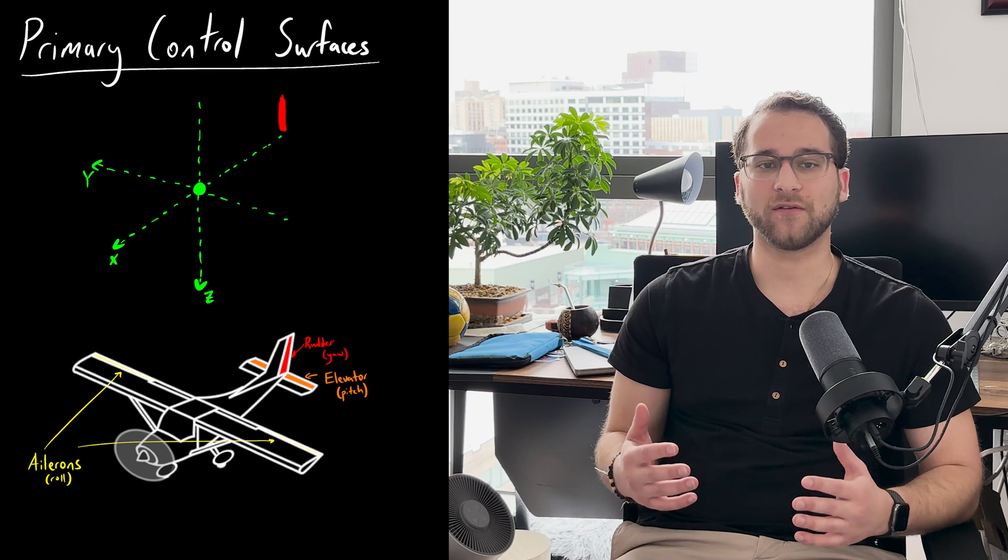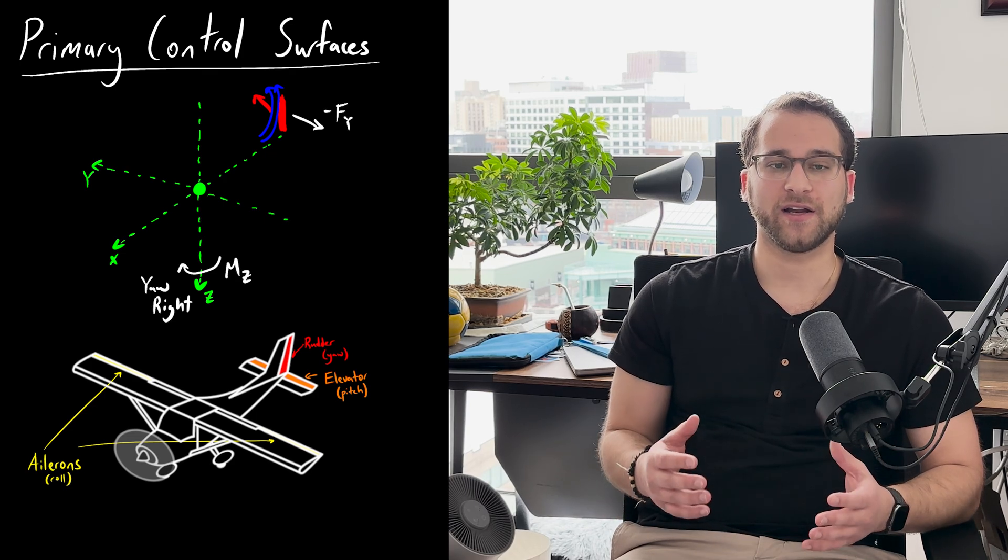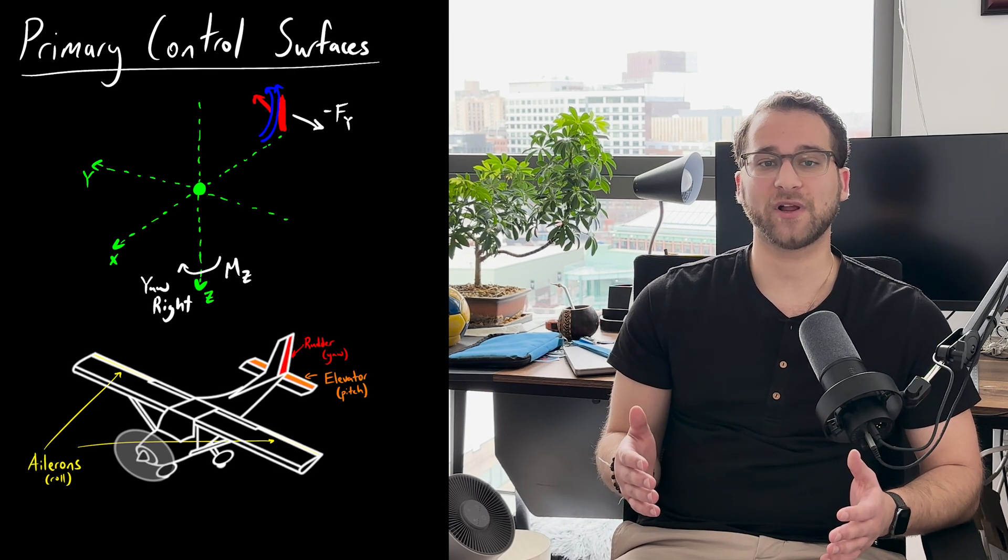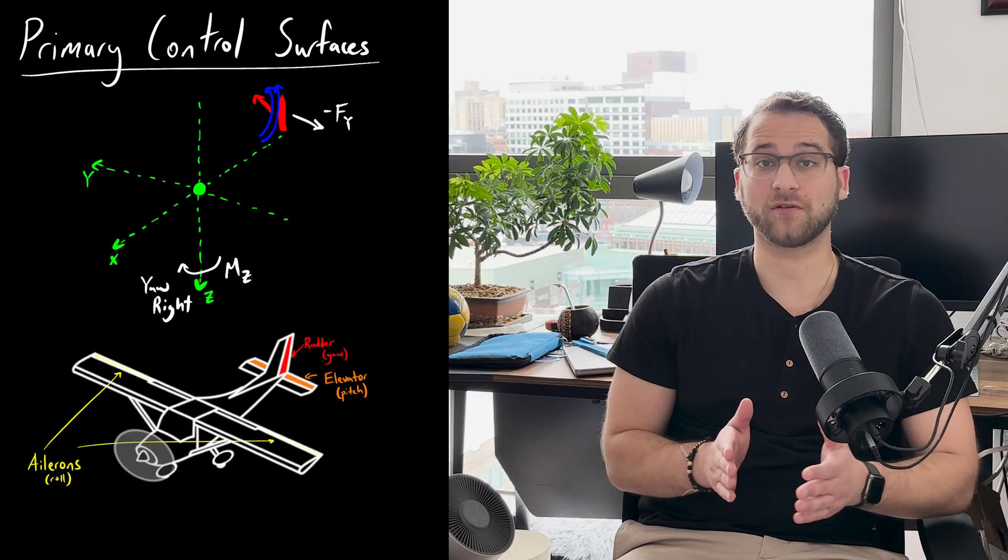The rudder controls the yaw of the plane. It is located on the tail of the plane, and if it is deflected to the right, the tail of the plane will be forced to the left, and as a result, the plane will yaw rightwards.